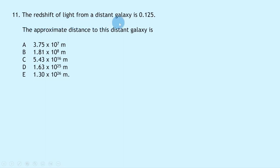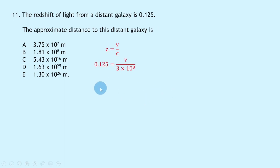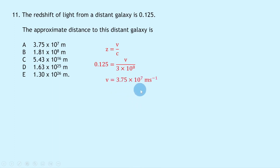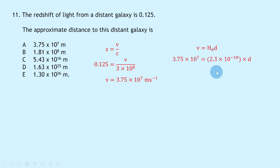Question 11 says the redshift of light from a distant galaxy is 0.125. The approximate distance to this galaxy is? We first find the recession velocity using z = v/c: 0.125 = v / (3 × 10⁸), giving v = 3.75 × 10⁷ m/s. Then using Hubble's law v = H₀d: 3.75 × 10⁷ = 2.3 × 10⁻¹⁸ × d, giving d = 1.63 × 10²⁵ metres, which is option D.